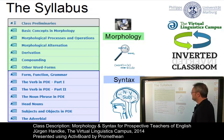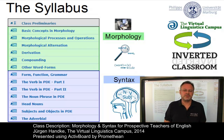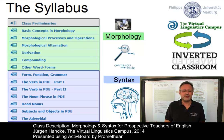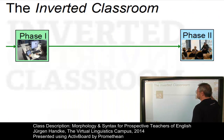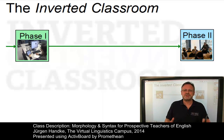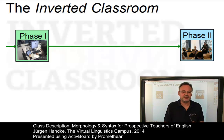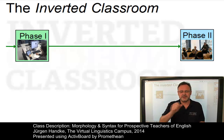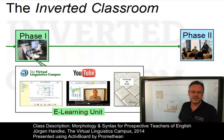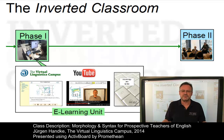Prior to the content units, we have our class preliminaries which inform you about the content of the class and provide video-based advice on how to cope with our educational model — the inverted classroom. This model swaps the two central phases of teaching and learning: content delivery and content acquisition are now self-guided and online, and the subsequent in-class phase is dedicated to practicing and deepening. In other words, we supply you with the content via our e-learning units on the Virtual Linguistics Campus, you go through the content on your own, and then we meet in class to practice and solve questions.